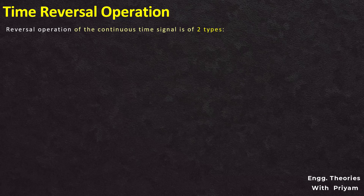Reversal operation of the continuous time signal is of two types: time reversal and amplitude reversal. In this lecture you will understand what is the time reversal operation of the continuous time signal and some examples based on the time reversal operation of the continuous time signal.